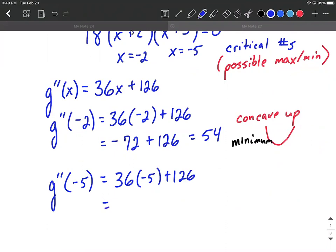In this case, we get negative 54 overall, because this was negative 180 plus 126. So that'll give us negative 54. With being a negative value, that tells us concave down.